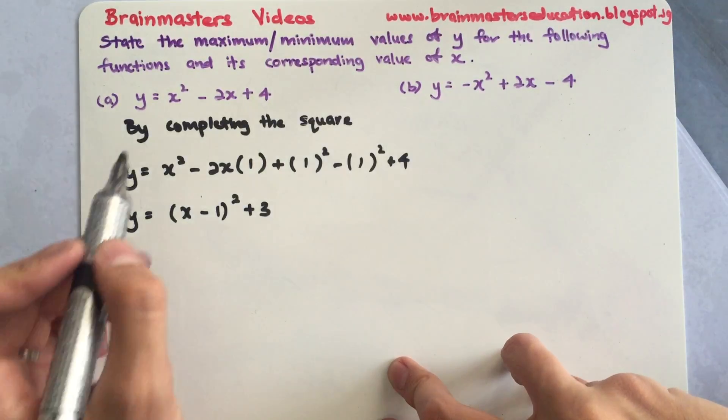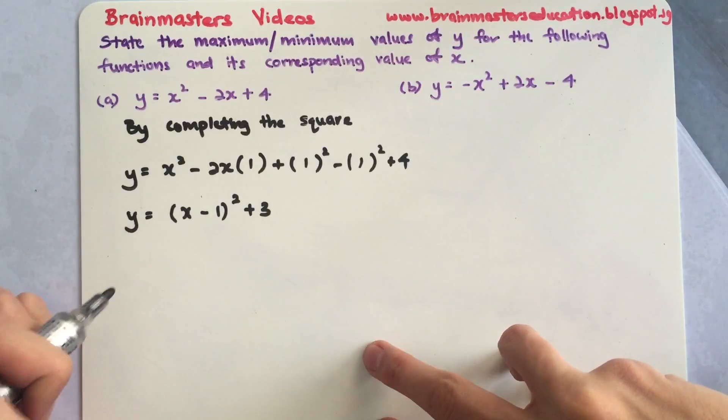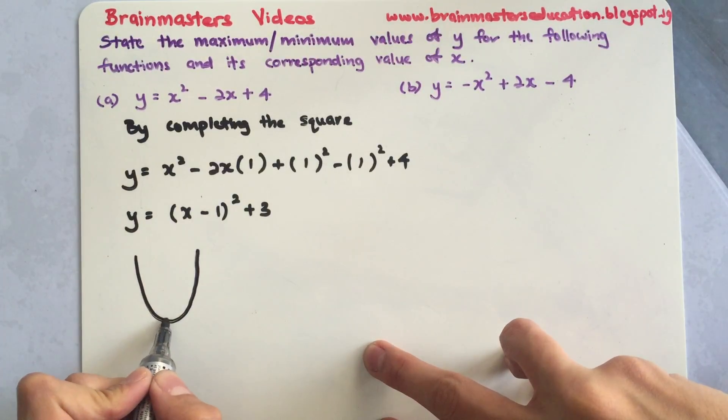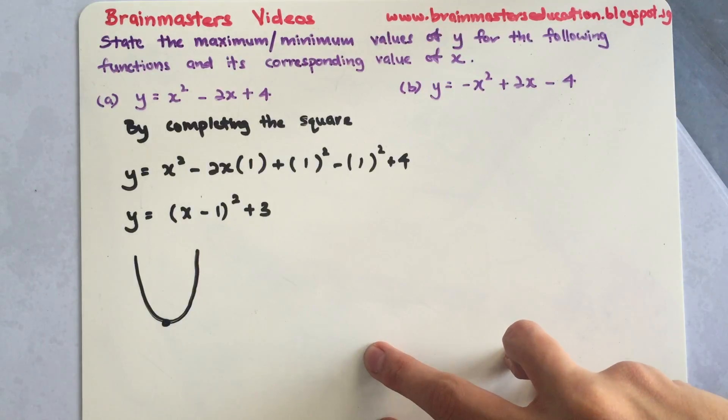In this case this is a positive graph, which means it's a happy face. Since it's a happy face, we are actually finding the minimum point, the lowest point. So how do we get a point?